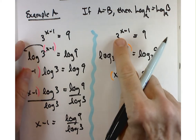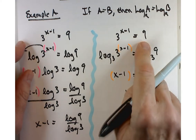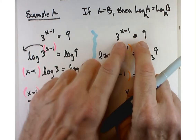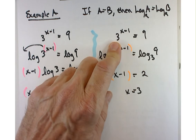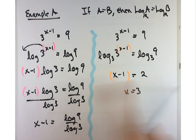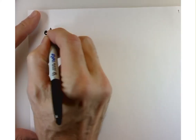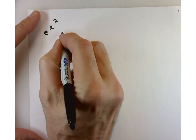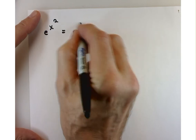The moral of the story here is to take the log of any base — take the log of this base. Sometimes it will work better than others, but where it works, use it. This is still example A, just the extended version: e to the x squared equals e to the 9th.